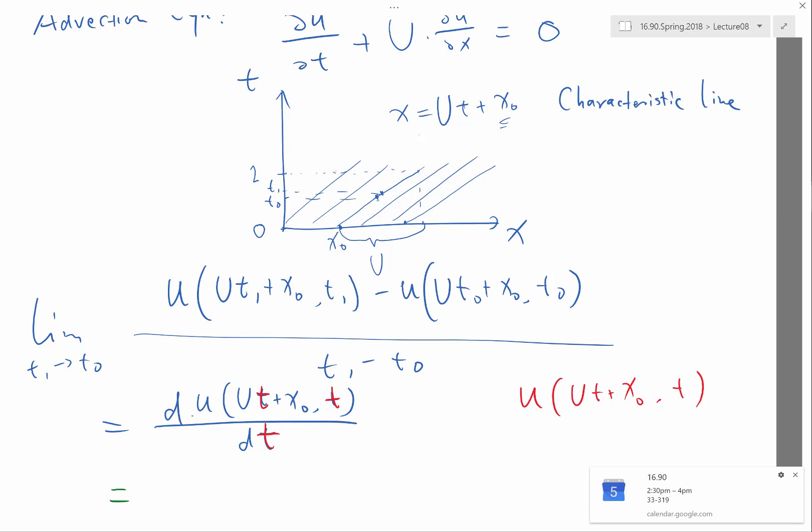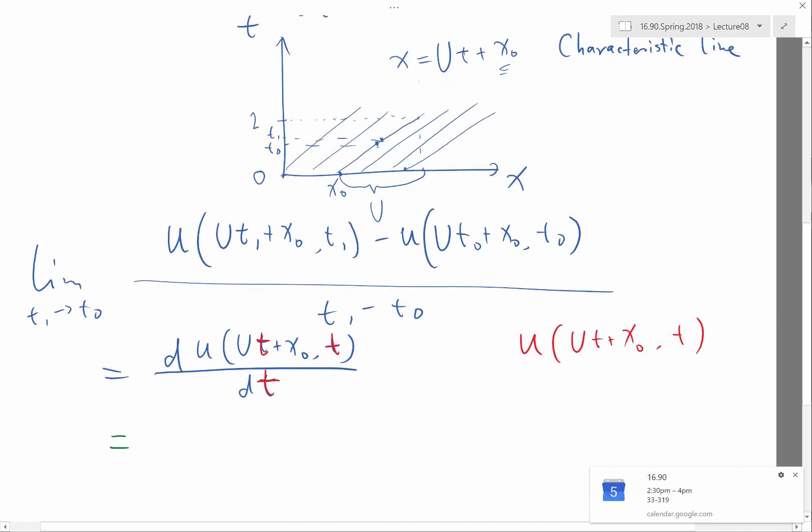It's equal to partial u, partial t. Right. It's equal to partial u, partial t. That takes care of this variable. You have plus something, right? Okay. So you have partial u, t plus x0, partial t.